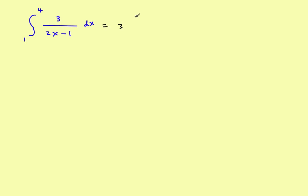So this will be 3 times the integral from 1 to 4 of, and that will make this be now 1 over 2x minus 1. And then I've got a dx right here.